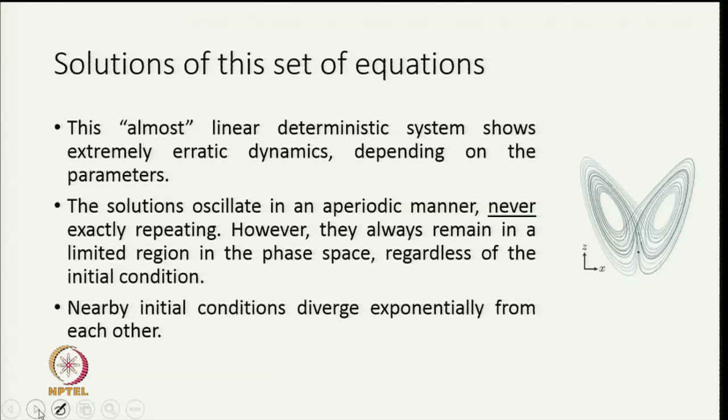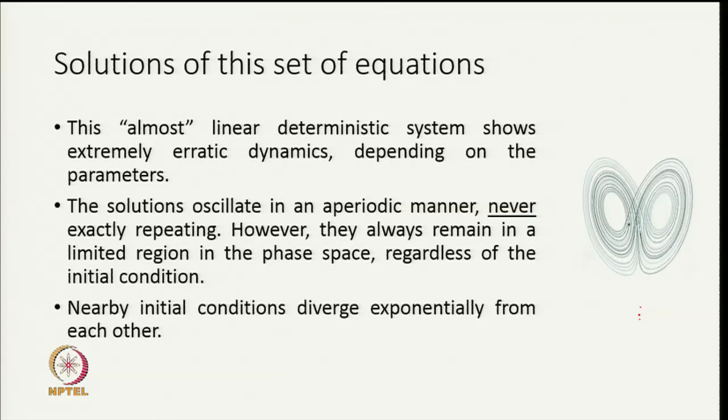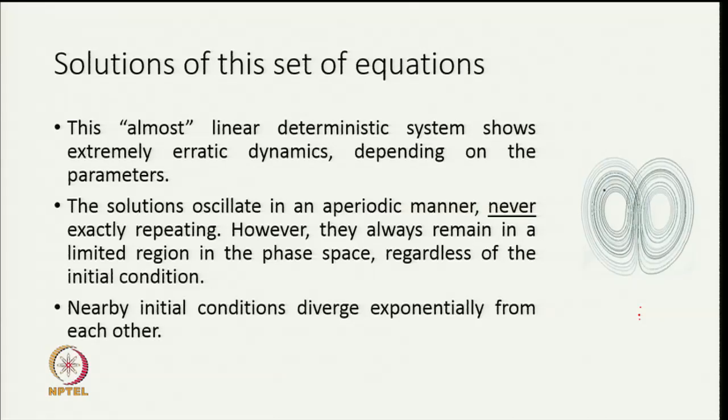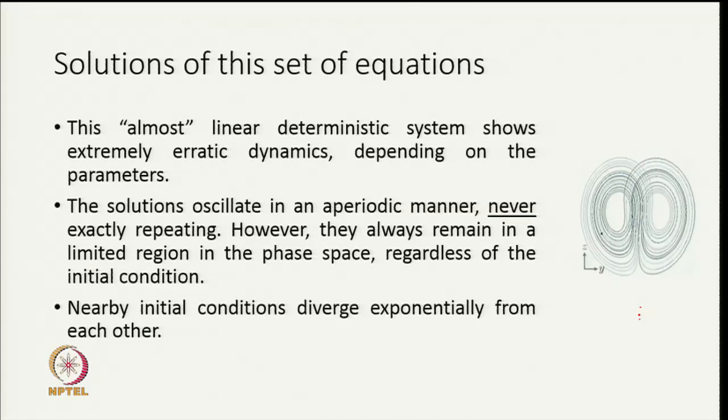The solutions oscillate in a fashion where the orbit goes around these two branches of what looks like a butterfly's wings. As you rotate this image of this object, the famous Lorenz attractor, you can see that there are two different segments and the orbit seems to go in an erratic manner from one side to the other. Nevertheless, the orbit always seems to remain in the same general area.